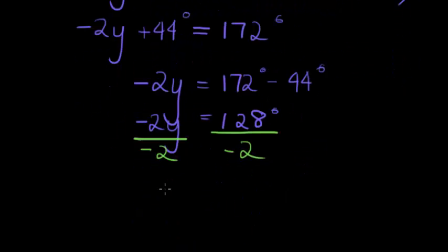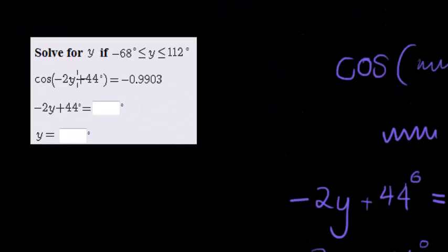Let's see. We get y is equal to negative, that's 64. Negative 64 degrees is the angle that y must take, so that if I take negative 64 and I substitute it in here, I will actually get that cos of this thing will equal negative 0.9903.